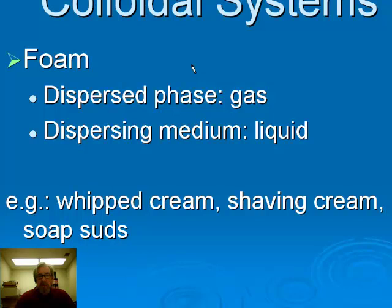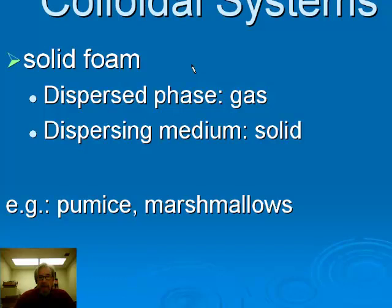Many colloidal systems have familiar names. A foam is a colloidal system where the dispersed phase is gas and the dispersing medium is liquid — tiny particles of gas spread through a liquid. Examples include whipped cream, shaving cream, and fine soap suds. A solid foam is similar, but the gas particles are dispersed through a solid — like pumice, marshmallows, or Styrofoam. Many solid foams were probably originally foams where the liquid solidified after the suspension took place.